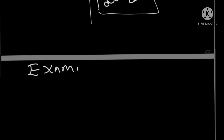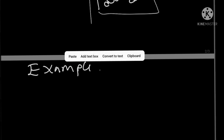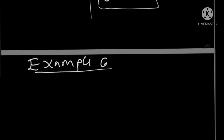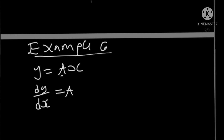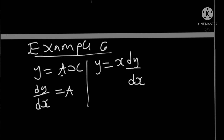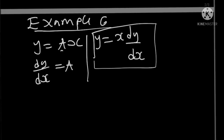Example 6. Form the differential equation associated with y equals ax. In this primitive equation, we only have one essential constant a, so dy over dx gives us a. Since we have the value of a, we substitute: y equals x times a, but a is dy over dx. And this is the required ordinary differential equation.